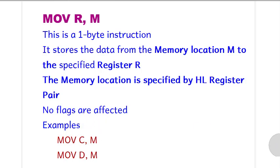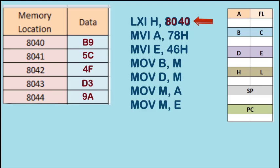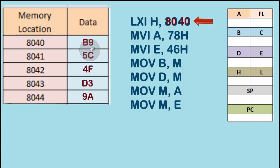Now let us see one animation based on this instruction. We have seven instructions in this case. The first one is LXI H,8040; MVI A,78H; MVI E,46H; then MOV B,M, MOV D,M, MOV M,A, MOV M,E, and so on. There is some data already present in the memory locations. Let us assume 8040 contains B9, 8041 contains FC, 5C and so on. These are the data which are already stored in the memory locations.